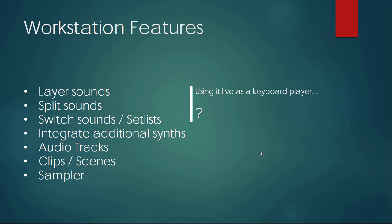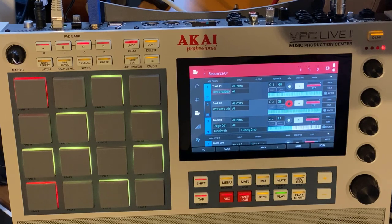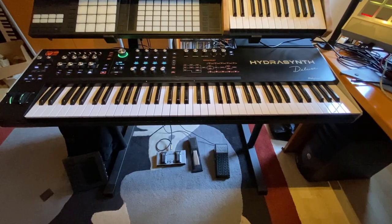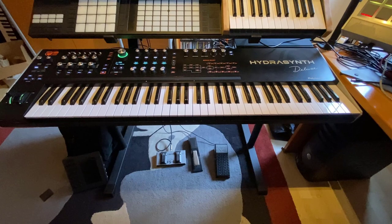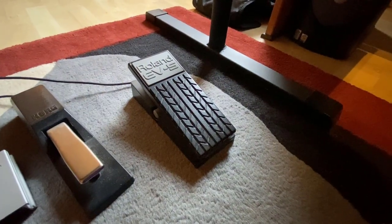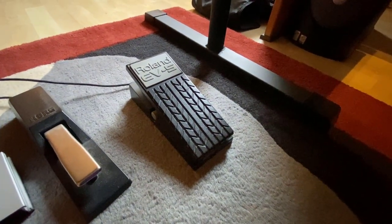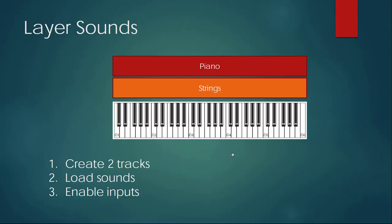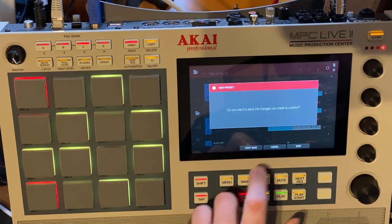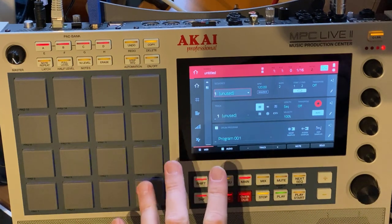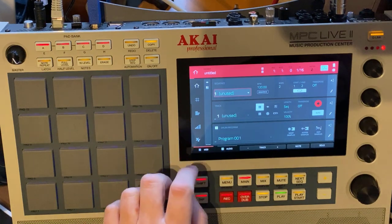Now let's look at the daily business of someone wanting to play in a band - how can you access and play multiple sounds at once in a live context? I already did a little layering and splitting demo. For the setup, I have my Hydrasynth connected to the MPC going through Bitwig just to record, but in a live context you'd connect any keyboard directly. I also have a Roland EV-5 expression pedal connected, which we'll need later for switching sounds.